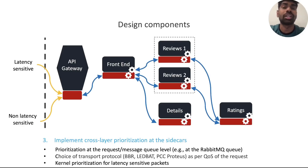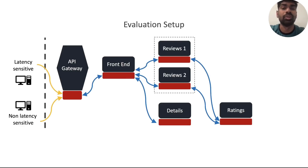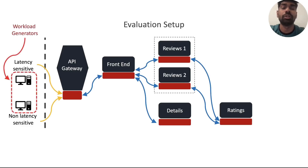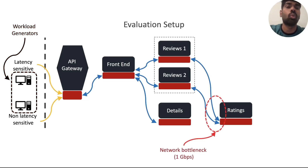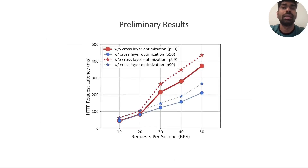Additionally, we could also do prioritization at the packet level at lower layers like the kernel. For the purpose of illustrating our main points, in our prototype we do kernel prioritization of the sidecar for latency-sensitive packets. To evaluate our prototype implementation, we use the following setup: workload generators hit the API gateway with both kinds of workloads, and in order to create network contention, we set up a bottleneck of one Gbps as shown by the red circle. More details are in the paper. The x-axis shows increasing RPS rates, and the y-axis shows the corresponding end-to-end latency.